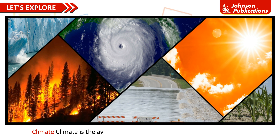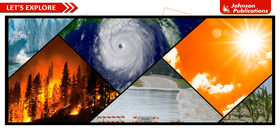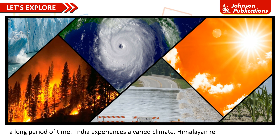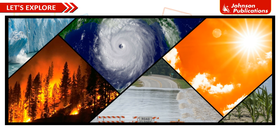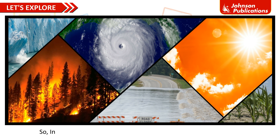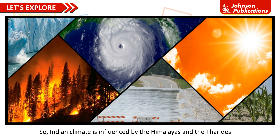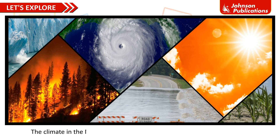Climate is the average weather condition of a particular place over a long period of time. India experiences a varied climate. Himalayan regions are very cold, desert regions are very hot, and coastal regions are humid. Indian climate is influenced by the Himalayas and the Thar Desert. The climate in the north is temperate and in the south is tropical monsoon.